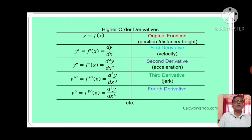Here, higher order derivatives — see the function y is equal to f of x, means y is a function of x. This is the original function; it may be position, it may be distance, it may be height. Now, if we differentiate y with respect to x, then we get y dash is equal to f dash x, is equal to dy by dx. This is the first derivative. If y is taken as position, then y dash is velocity.